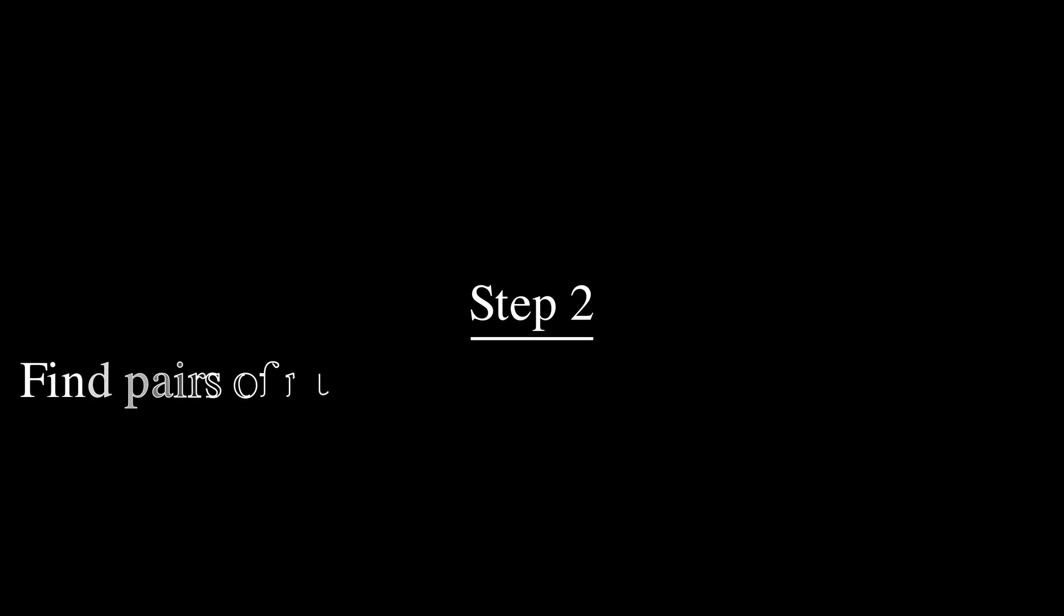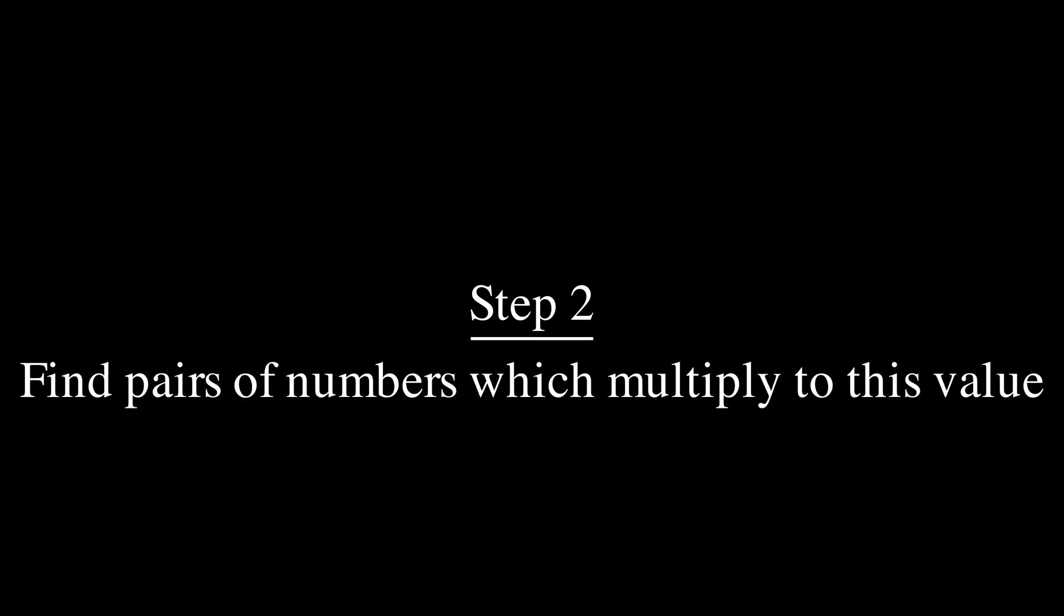Step two is to try to find all of the pairs which multiply to this number. Now it turns out you don't really need to find all of them, but go ahead and write down as many numbers as you can that multiply to the magenta value for now. Pause the video and resume when you're ready to continue.